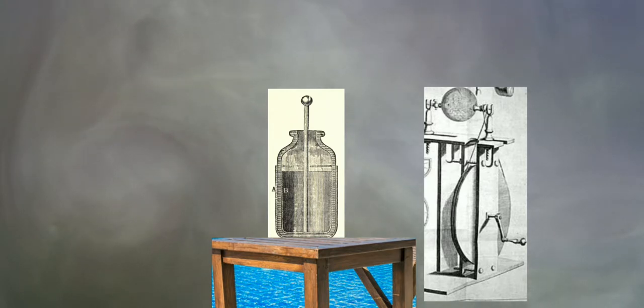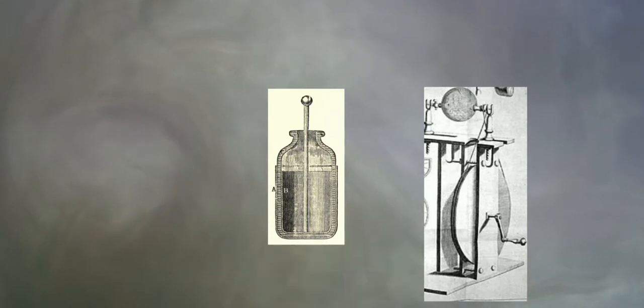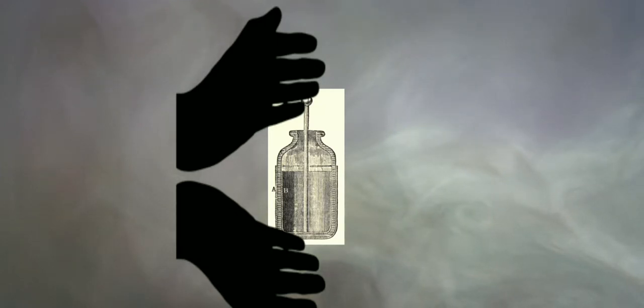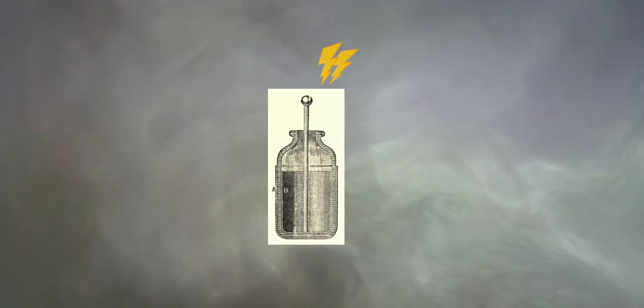Until an accident occurred. One day, Muschenbroek forgot to put the Leyden jar on the wooden table and held the jar at the bottom end, touched the top with another hand. And a big shock dropped him to the ground. Muschenbroek succeeded.